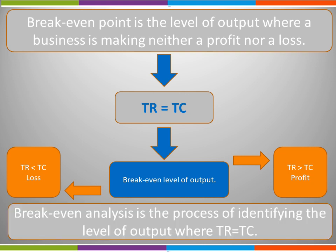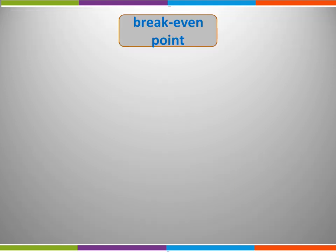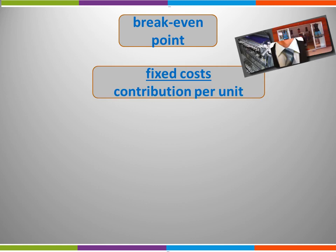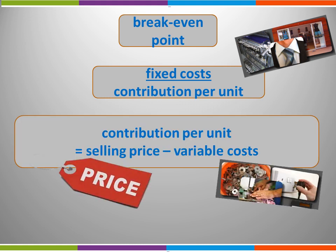Breakeven analysis is the process of identifying the level of output where a business is achieving total revenue equal to total cost. We can calculate the breakeven point using the following formula: fixed costs divided by contribution per unit. The formula for contribution per unit is selling price minus variable costs.